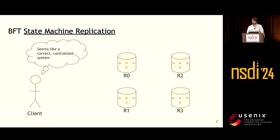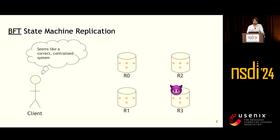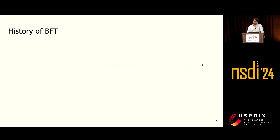State machine replication is a fundamental primitive in distributed systems that allows a set of replicas to behave as a single consistent state machine, which in turn allows those replicas to provide a single logical service to clients. The protocol is said to be Byzantine fault-tolerant if it is able to tolerate arbitrary deviations in a subset of the replicas. It turns out this is quite an old problem — first proposed and solved by Lamport in the early 80s. At the turn of the century, Miguel Castro and Barbara Liskov published PBFT, which seems to be the first practical solution for the problem.